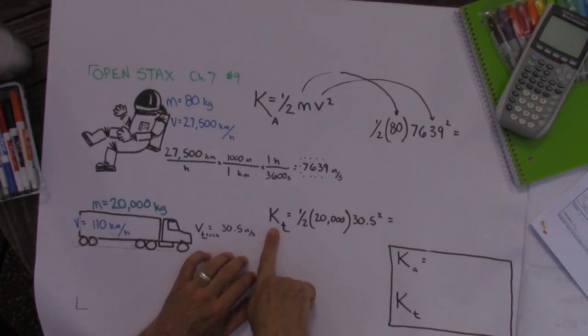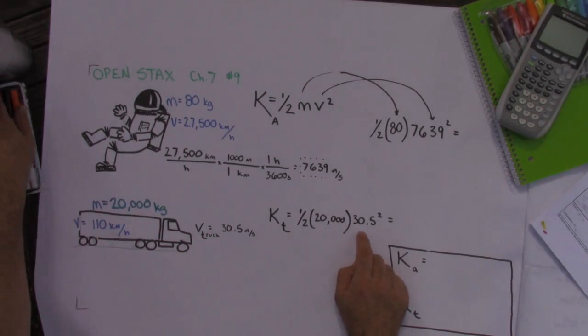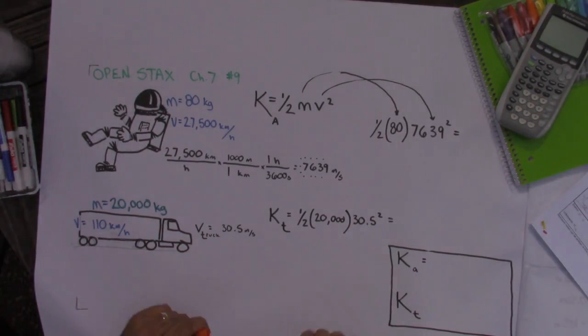I took the kinetic energy of the truck. I took one half times the mass of the truck times the velocity of the truck squared. And it turns out that the astronaut has a kinetic energy of about 2.3 times 10 to the 9th joules.